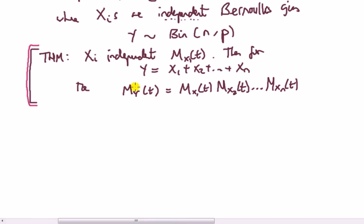All right, so let's actually apply the thing. Well, we've shown in the previous video that the MGF for Bernoulli is 1 minus p plus p times e to the t.